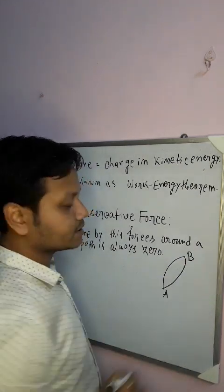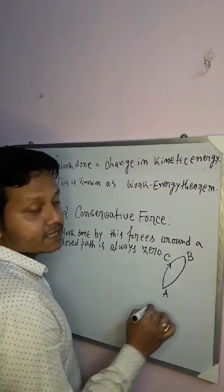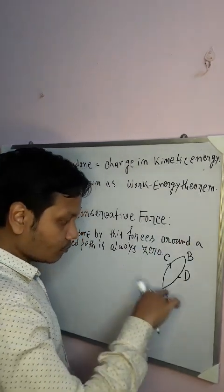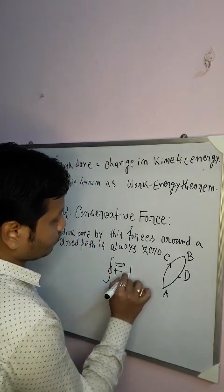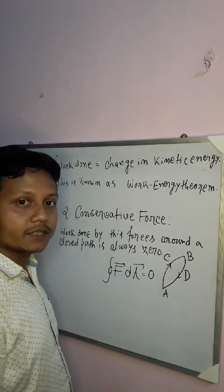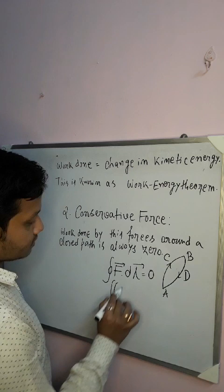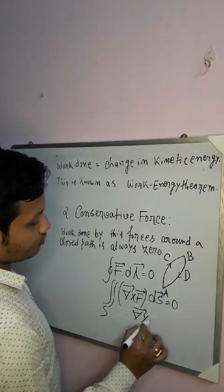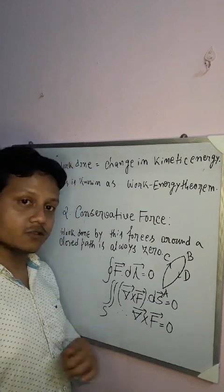How can we express this mathematically? Suppose a particle moves from A to B via path ACB, and returns from B to A via path BDA. Starting from point A, if a system moves and returns to its original position, it is a closed path. For a conservative force field, the closed line integral of F·dr equals zero. By applying Stokes' theorem, this becomes the surface integral of curl F · dS equals zero. Since dS is arbitrary, its coefficient vanishes, so curl F equals zero.